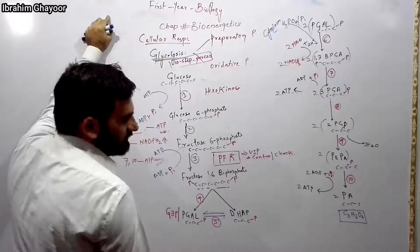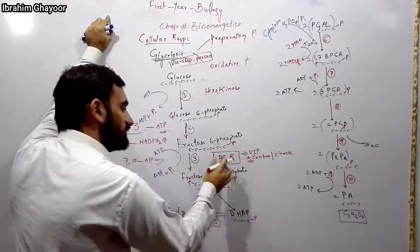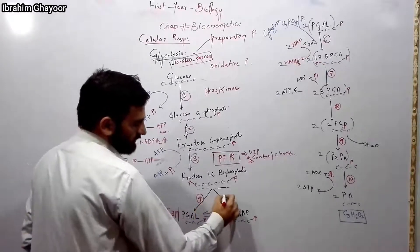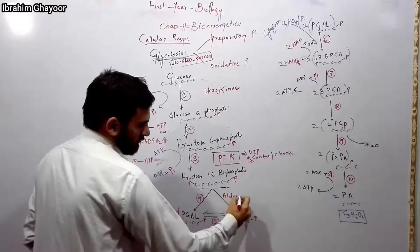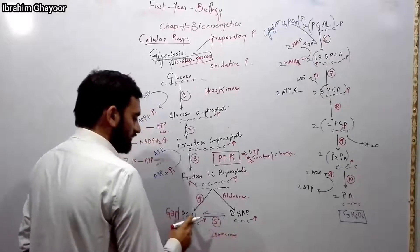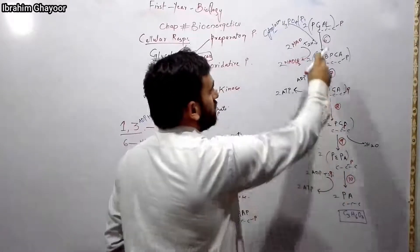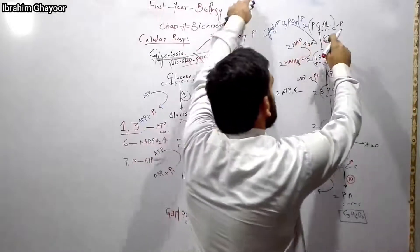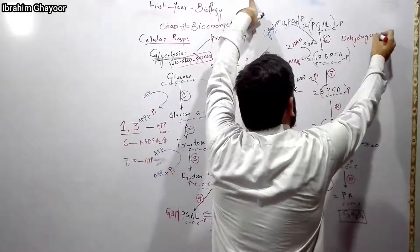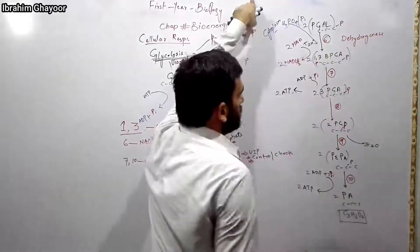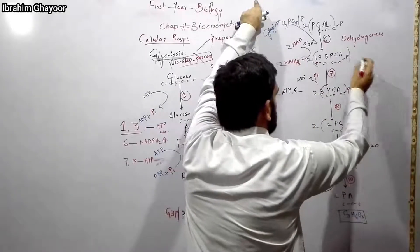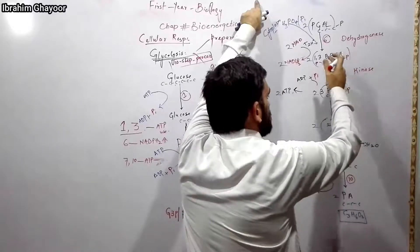Phosphofructokinase regulates the glycolysis process. The enzyme for the cleavage step is aldolase. The enzyme for the isomerization step is isomerase. The enzyme for the oxidative step is dehydrogenase, and the enzyme for the phosphorylation step is a kinase — pyruvate kinase or PGA kinase.